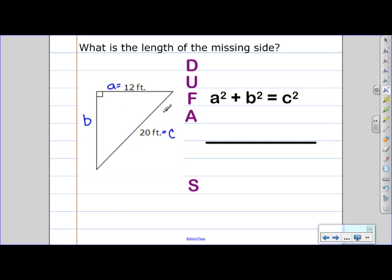So, we have our picture. D is for draw a picture. U is for underline. We're looking for the missing side, which in this case will be B. And our unit is in feet.